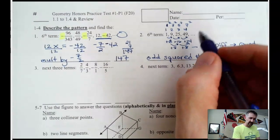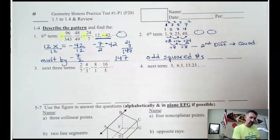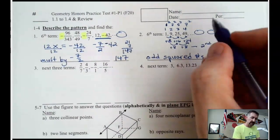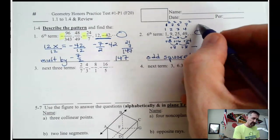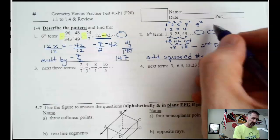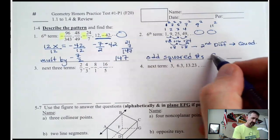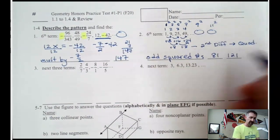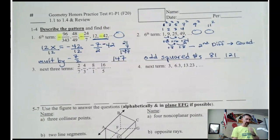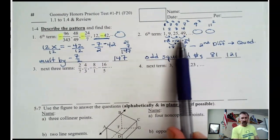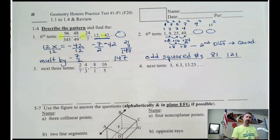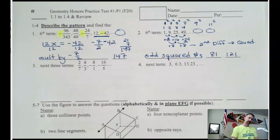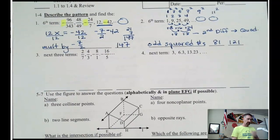This asks for the sixth term, so that would be two more. You see you have two lines down here. That was 7 squared, so the next one is going to be 9 squared, and then 11 squared. So 9 squared is 81, and 11 squared is 121. There's probably a way to do it with the second-difference method, but it might get a little complicated.